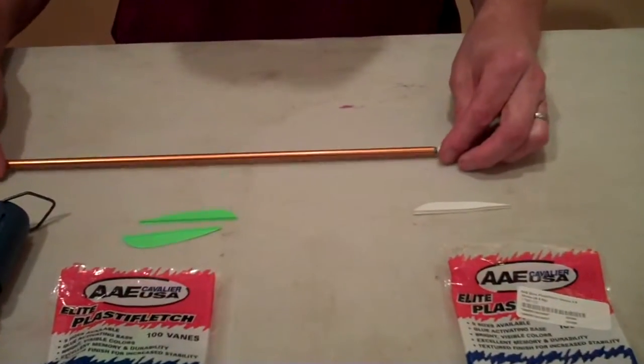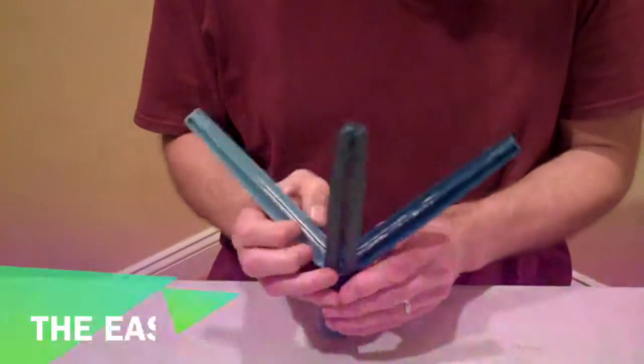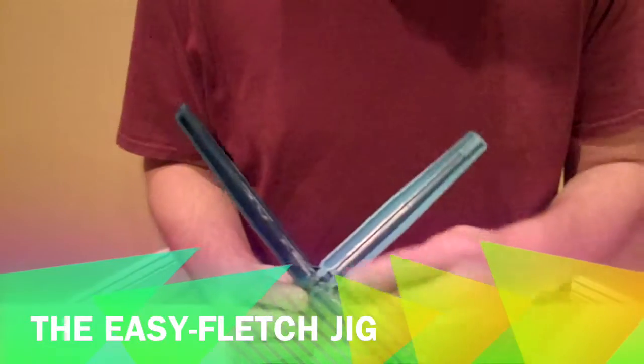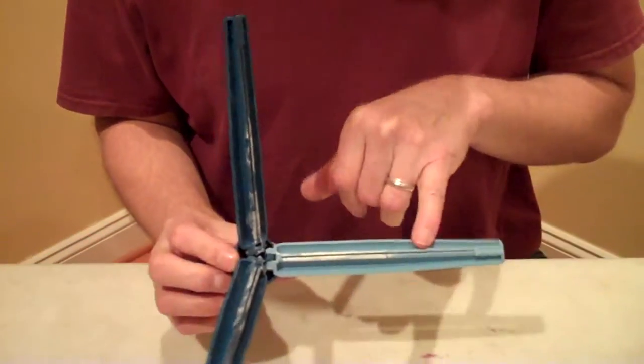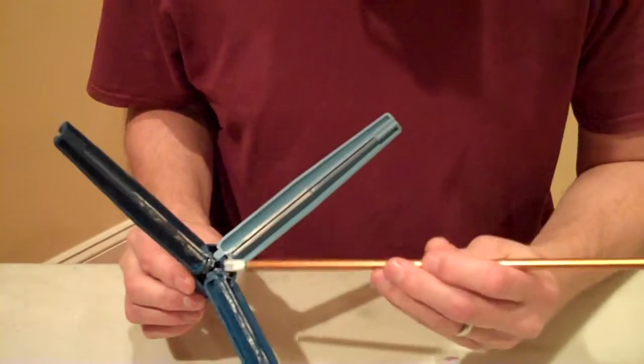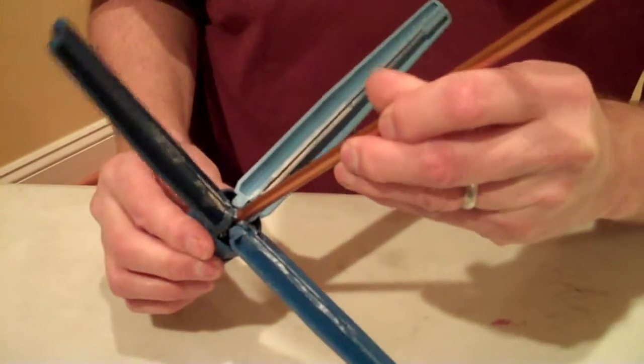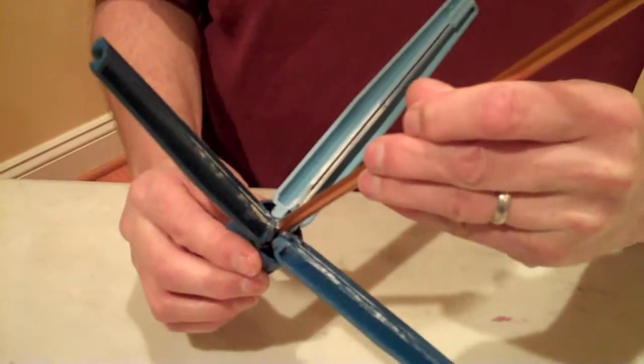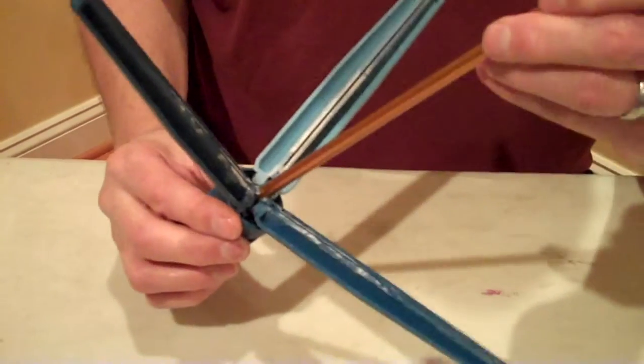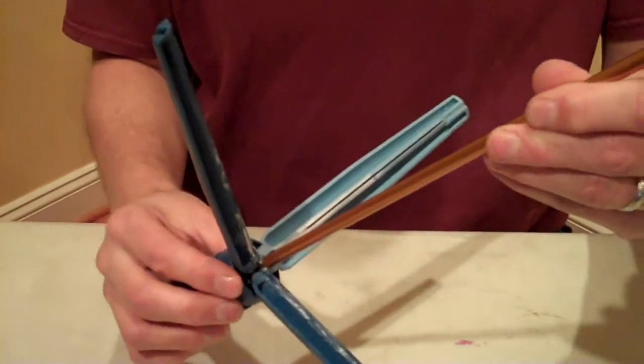So your arrow shaft is all prepped ready to go. You move the top off your Easy Fletch Jig. You open it up. You'll notice it has three colors. The lighter color will be for your index fletch. The other two for your hens. Inside there's going to be a slot in there. In that slot you're going to put your arrow and you're going to know it's in there. It'll slide in there and you'll feel it just gently. No play in there.